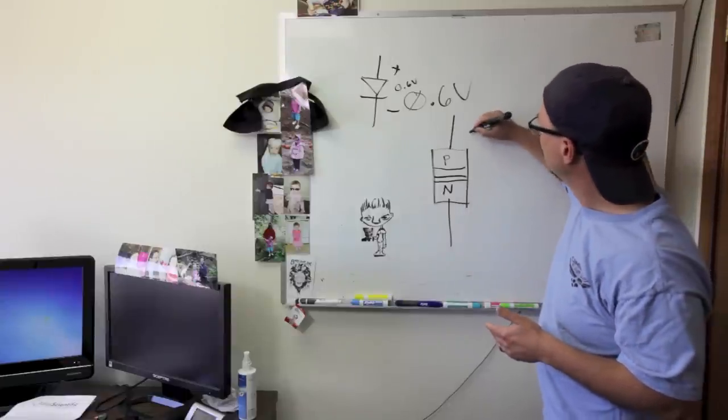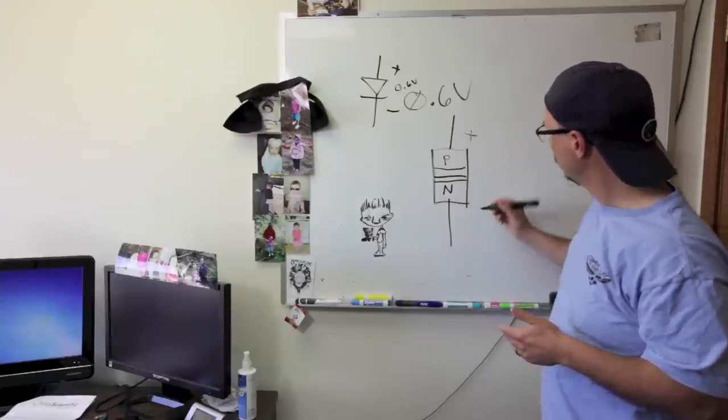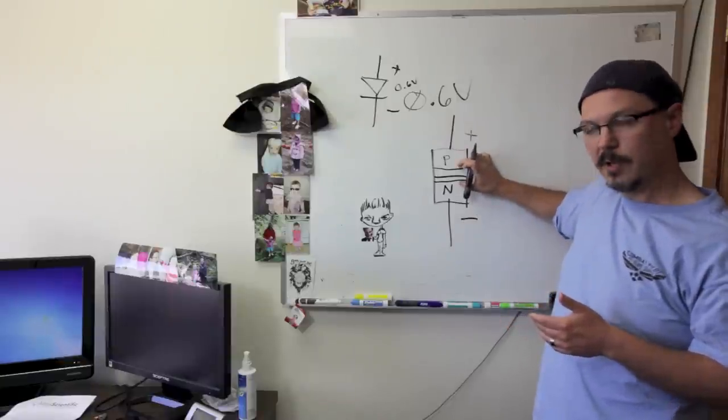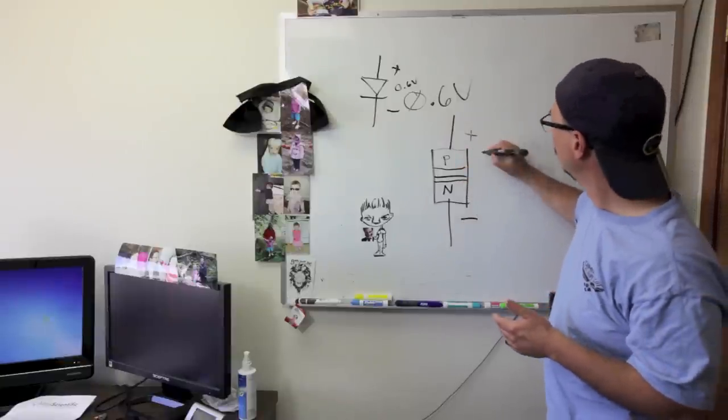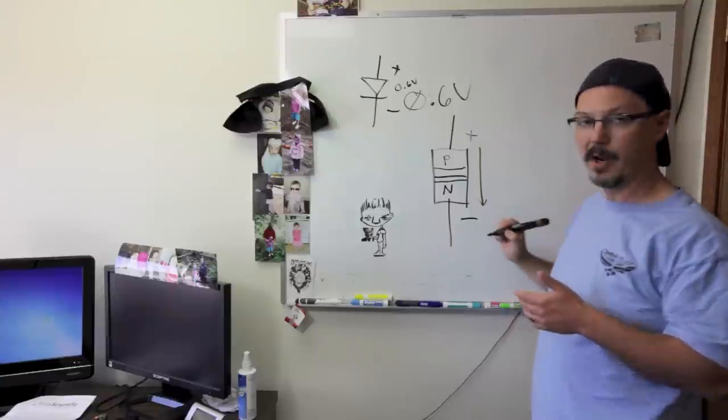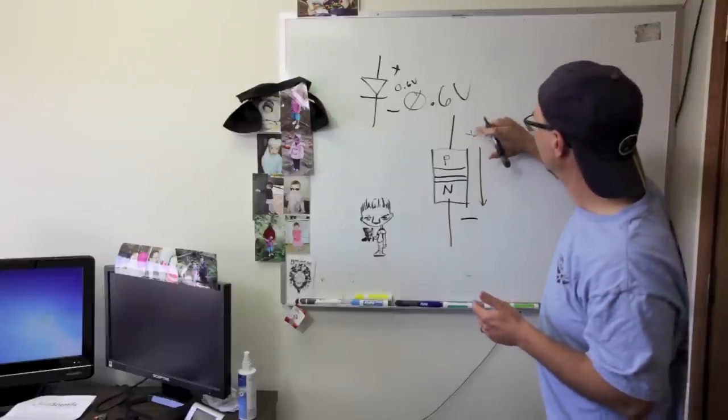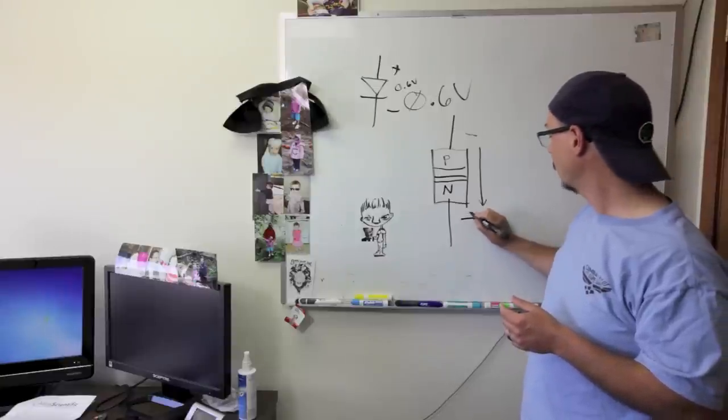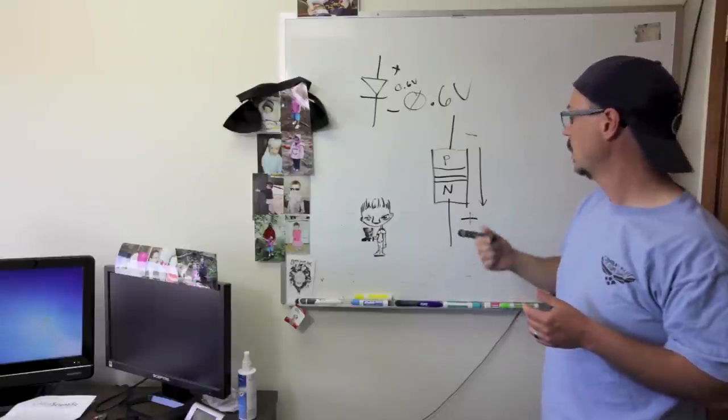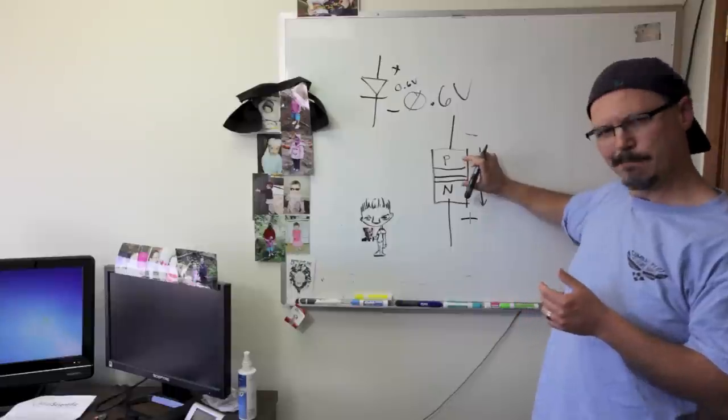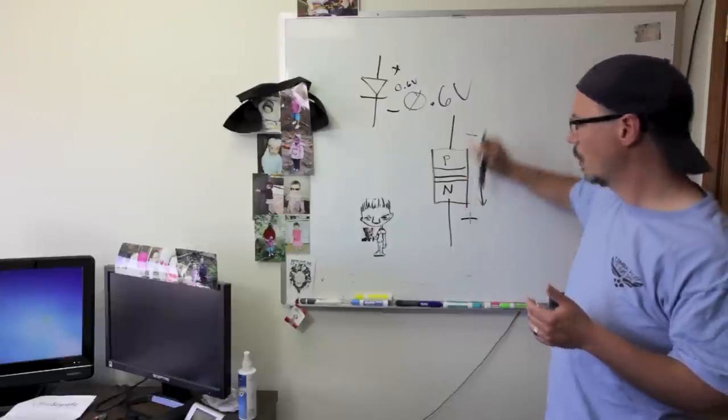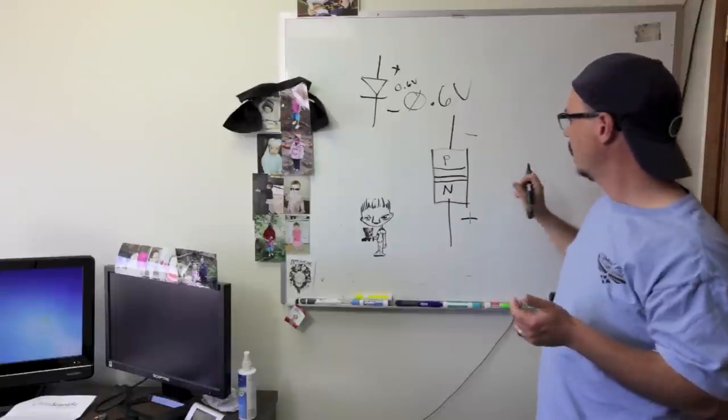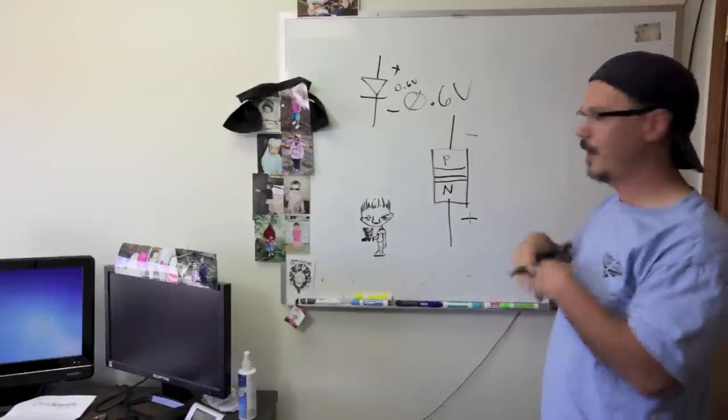A depletion region forms where the carriers actually separate, and electricity will not conduct here. Now if you apply a voltage from anode to cathode, the depletion region will actually shrink, and then you'll get current conducting. If you swap this and make this side the anode negative and the cathode positive, the depletion region actually gets bigger, and you don't get current going in either direction. And ultimately, if you reverse this enough, it'll go bang.